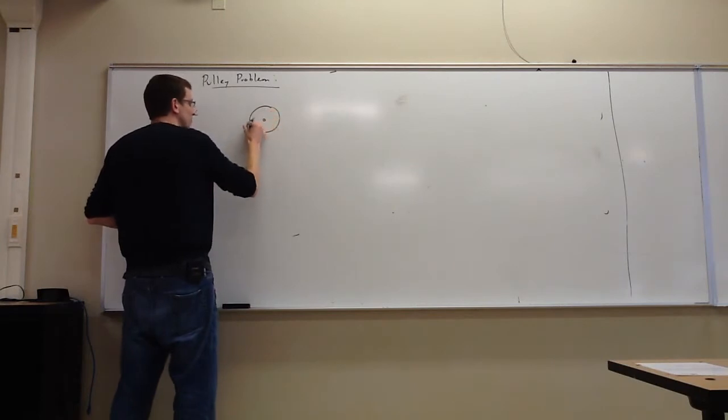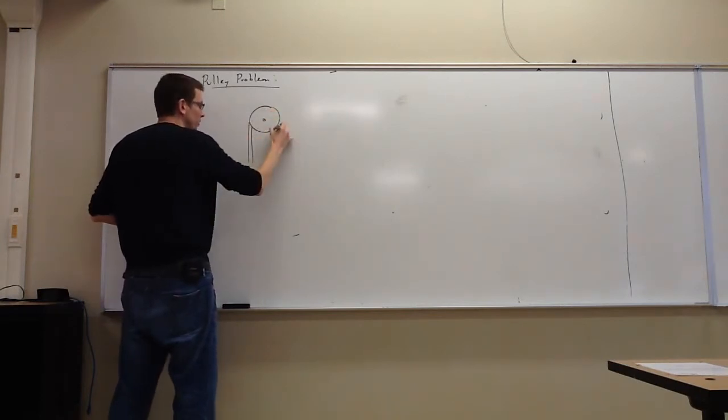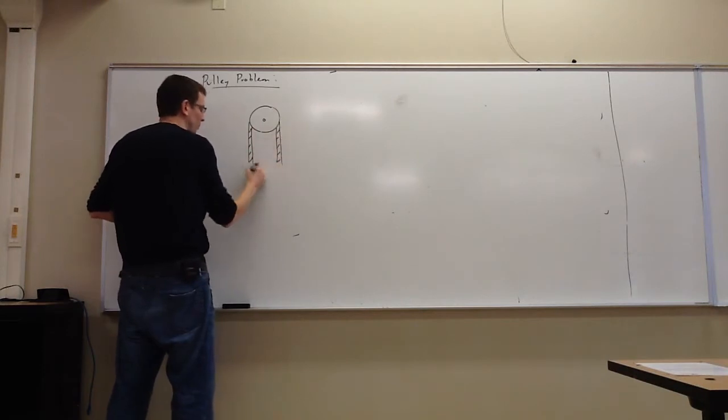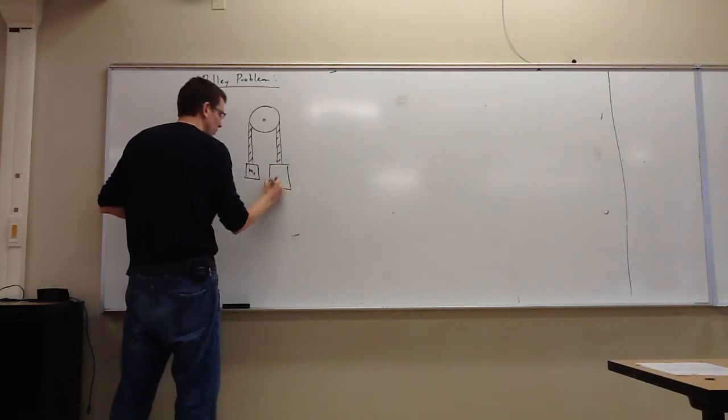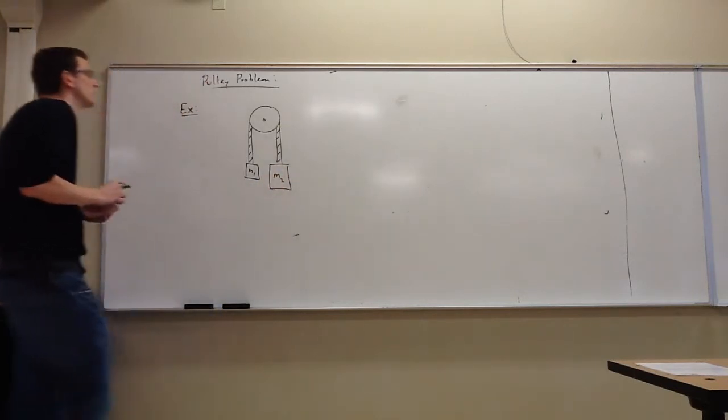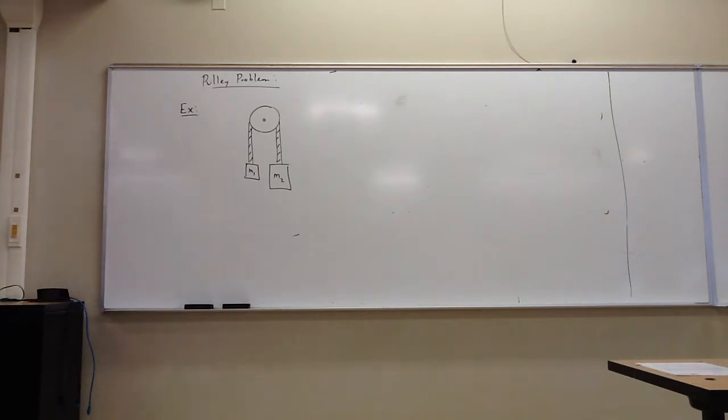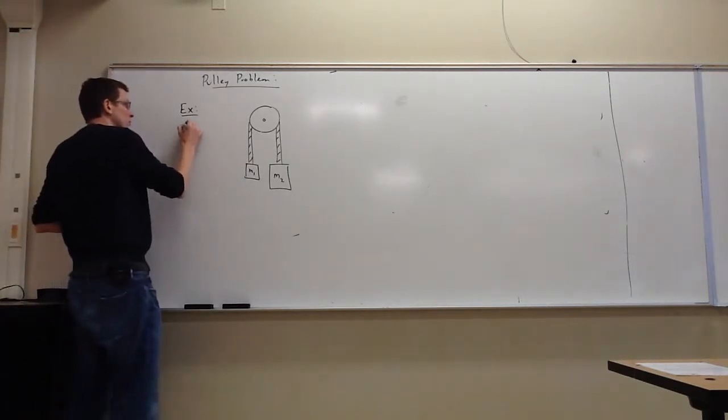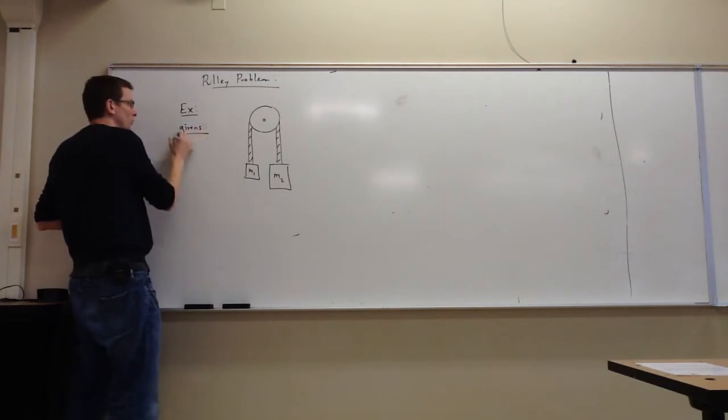Here we have a pulley. I'm going to drape a rope over it. I'm going to attach a mass to either end. And the givens in this problem are those two masses, M1 and M2.